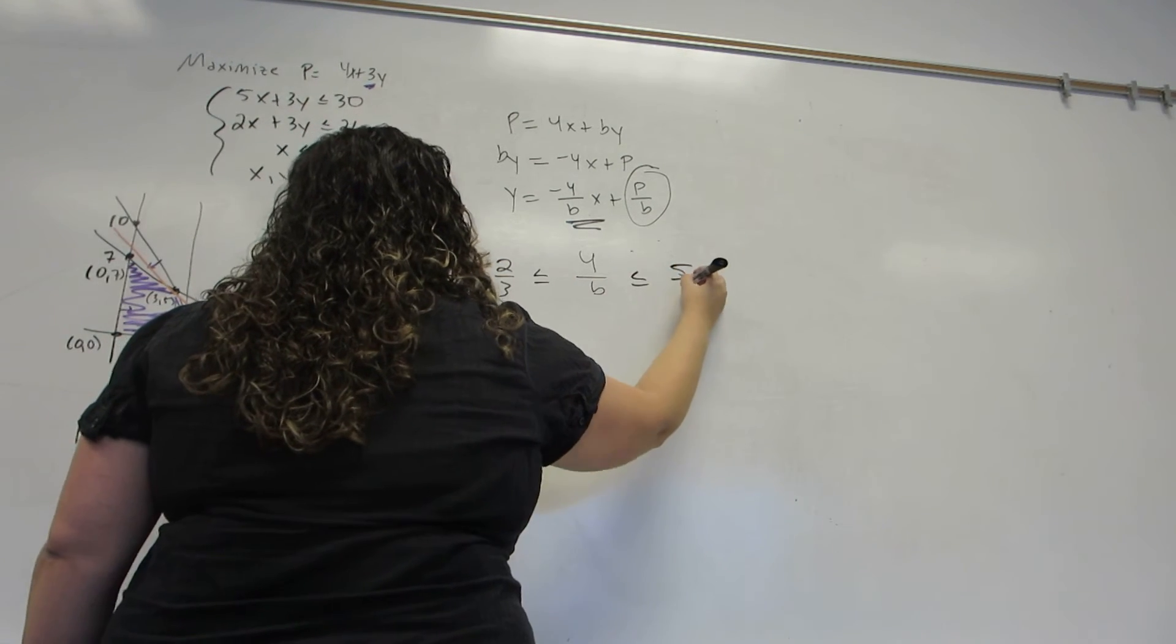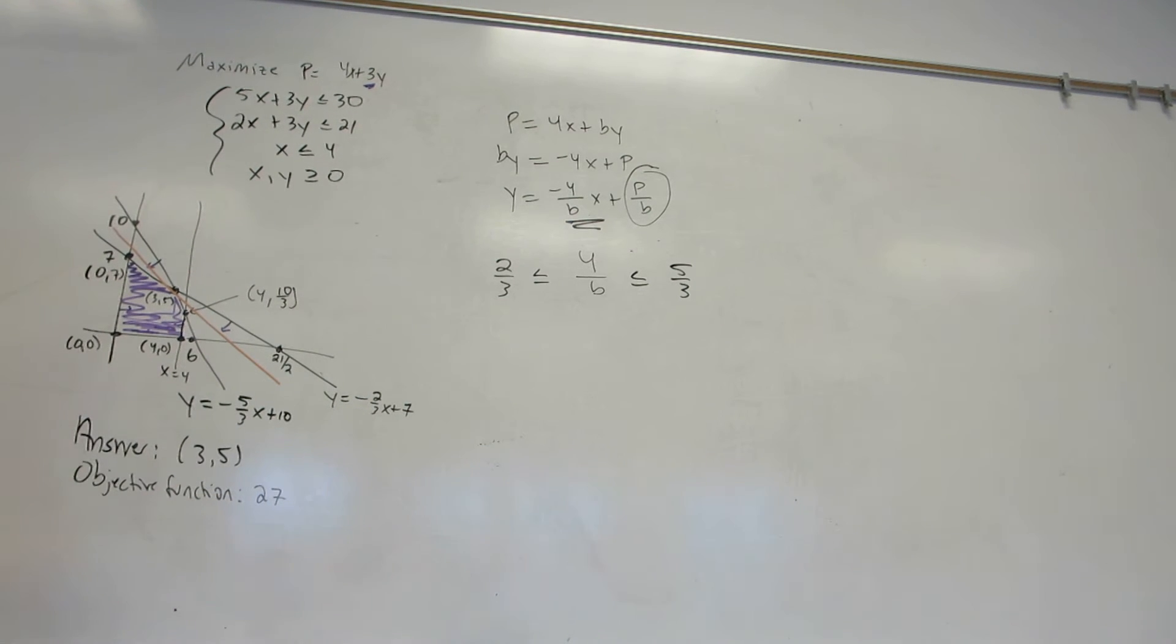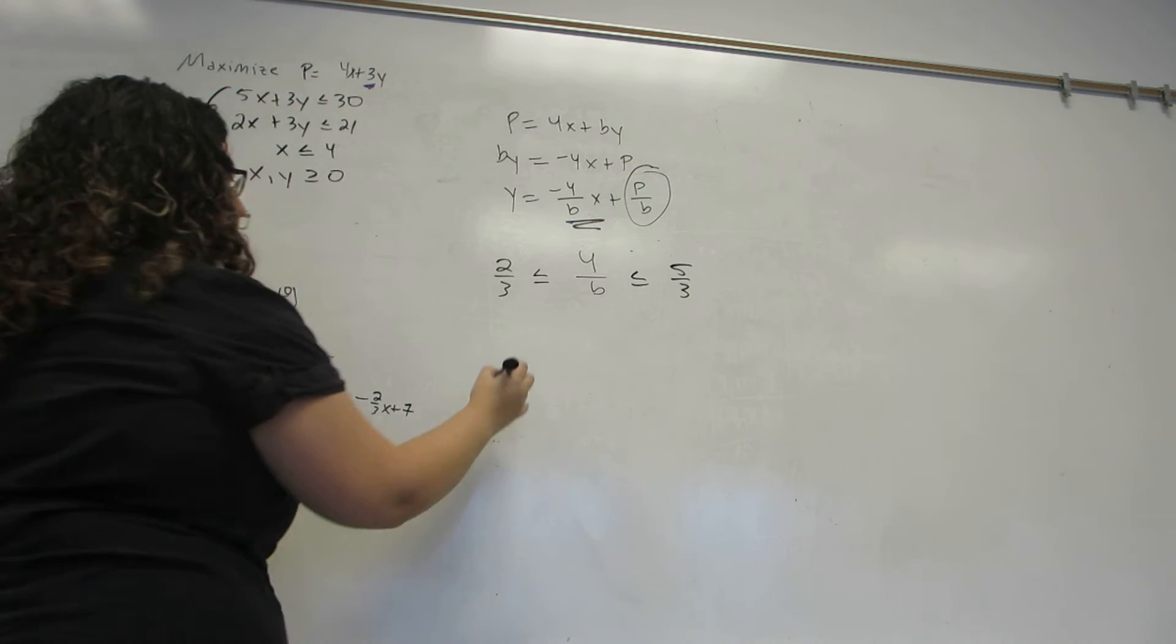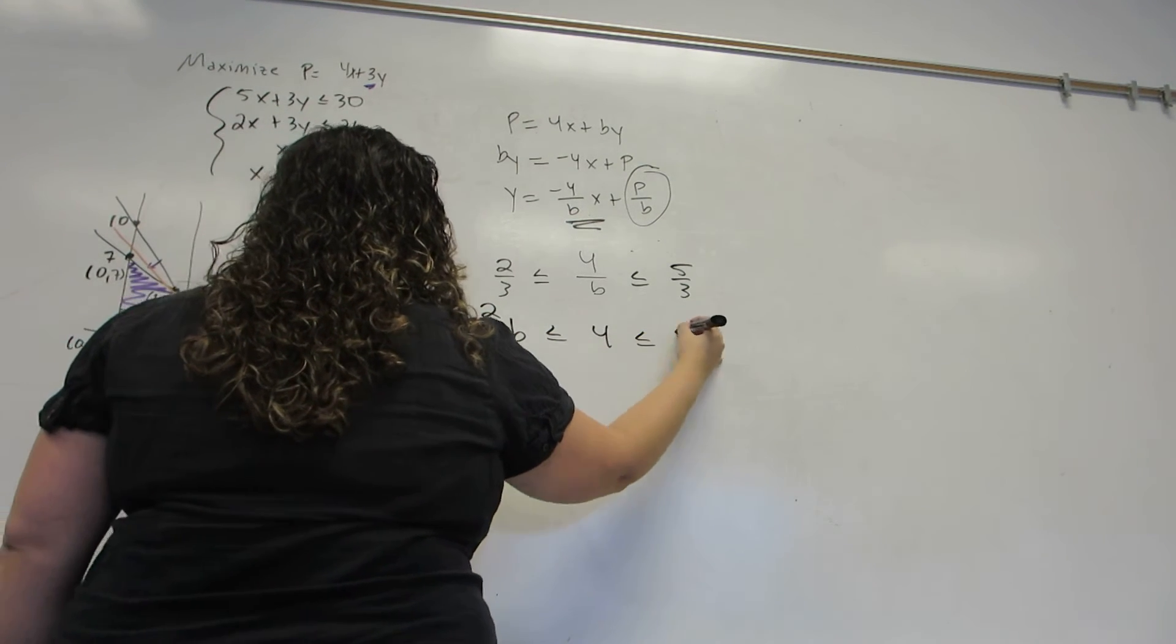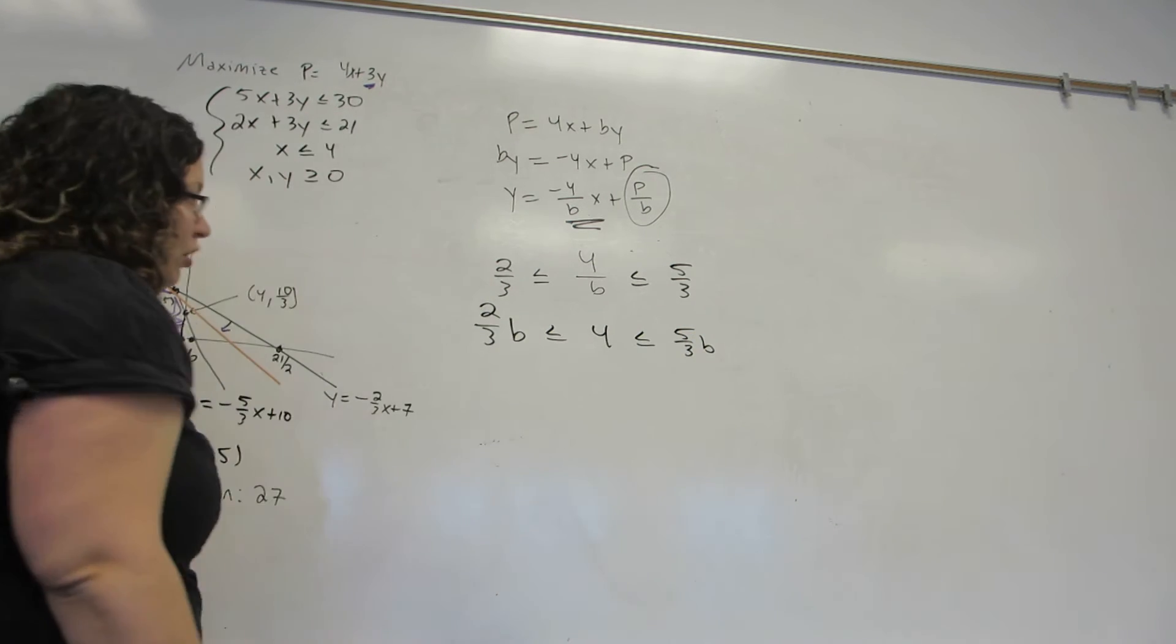Once again, I've dropped all negative signs. Now, in order to solve this, I need to get the b out of the denominator. So first, I'm going to multiply through by b. Now, this creates an interesting problem.